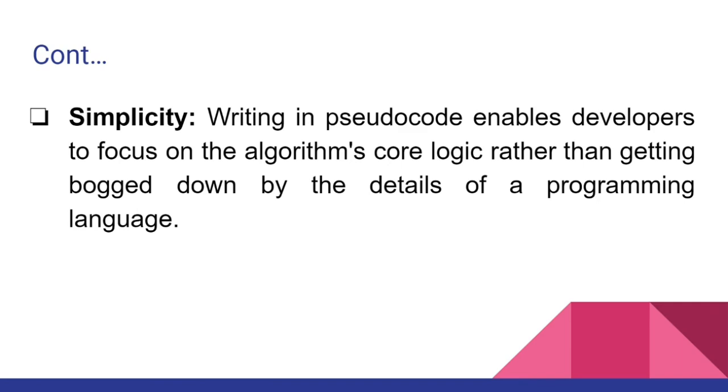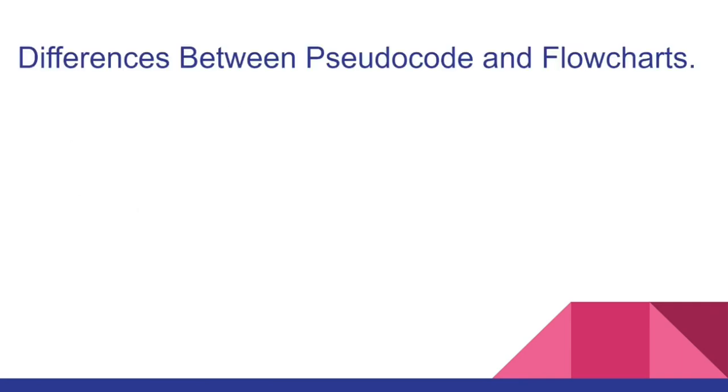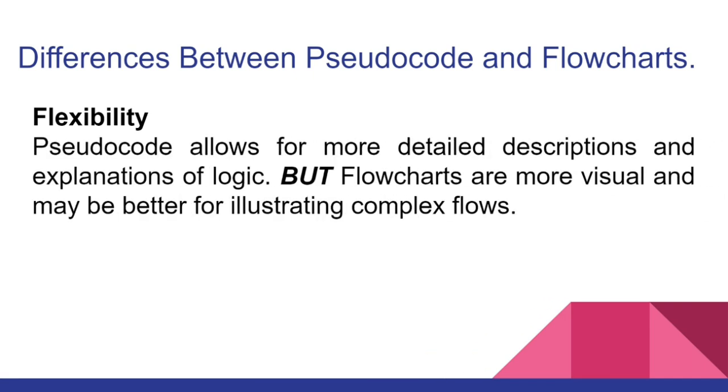We're also going to talk about the differences between pseudocode and flowcharts. One difference is flexibility: Pseudocode allows for more detailed descriptions and explanations of logic, but flowcharts are more visual and may be better for illustrating complex flows. Usage: Pseudocode is often used in programming courses and planning stages, whereas flowcharts are commonly used in documentation and presentations.